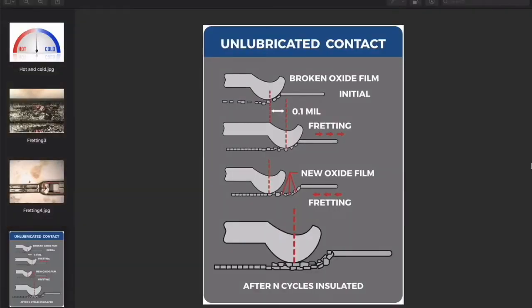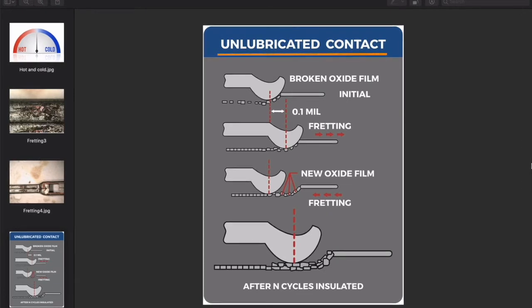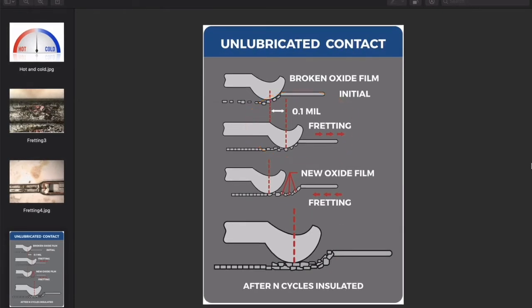Here is a graphic that illustrates fretting wear and the start of the corrosion process on an unlubricated or dry contact. On the graphic you can see we are talking about movements of 0.1 of a millimeter or below. The debris that builds up is most likely very small, almost like dust.